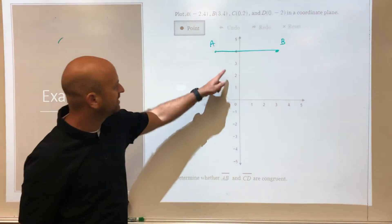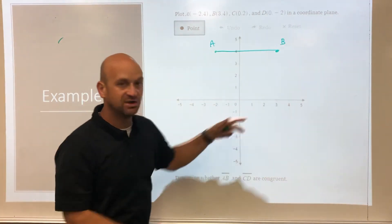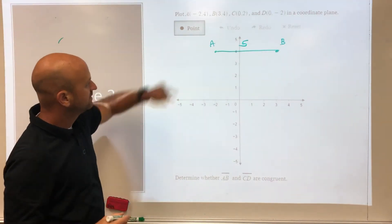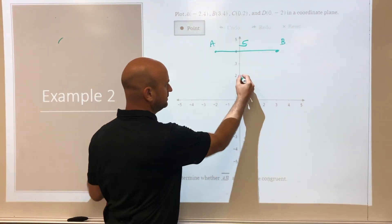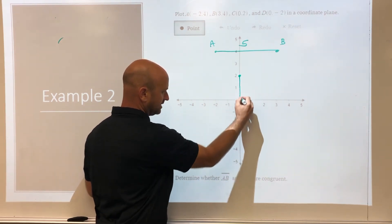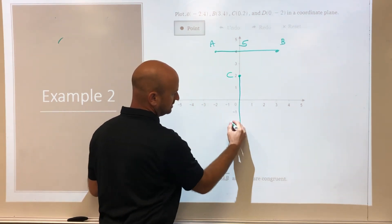By counting boxes one, two, three, four, five, we know this segment has a length of five. Now C is zero, two and D is zero, negative two, and we can connect these. When we count, this has a length of four.